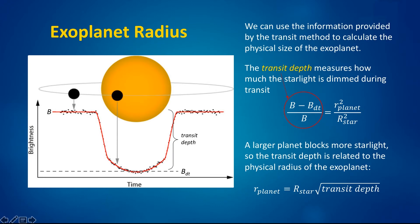What about the size of the planet? Here we use the information provided by the transit method to calculate the physical size of the exoplanet. It's quite simple, because the transit depth measures how much of the star's light is dimmed during the transit, and larger planets block more starlight. So the transit depth is clearly related to the ratio of the area of the planet to the area of the star.